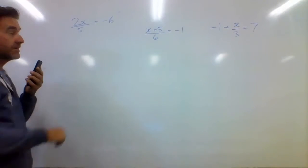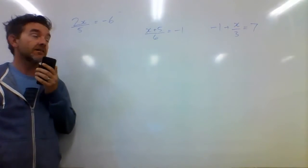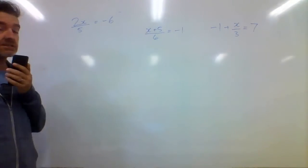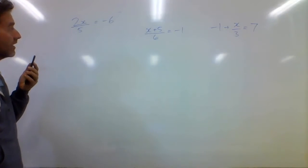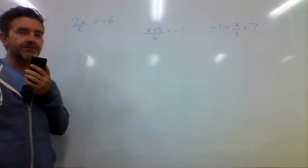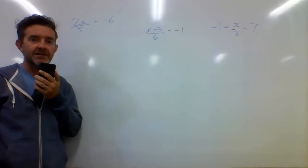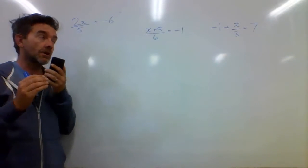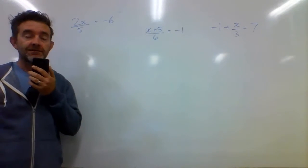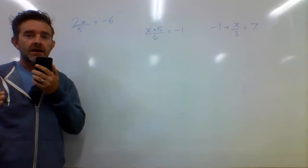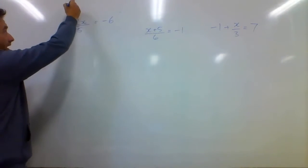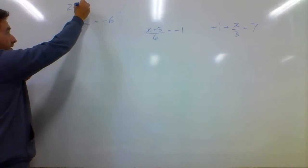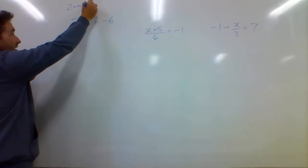The very first question I've got here is 2x over 5 is equal to negative 6. So what am I going to get rid of first? I need to get the x by itself. I need to get rid of either the 2 or the 5 first. Now I could rewrite this as 2 times x divided by 5.